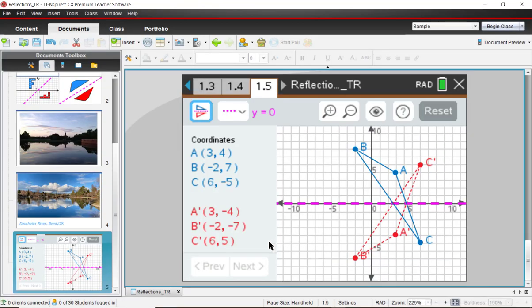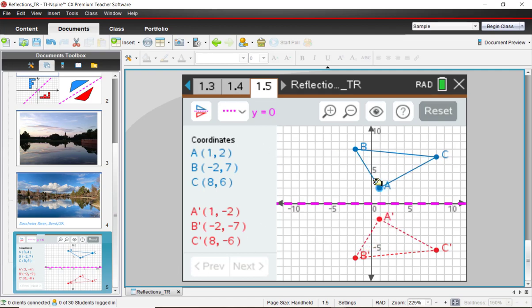Going back to the software, we shouldn't come up with any conclusions based on just one example. So let's go ahead and grab and pull vertices and see if you notice the same pattern among the coordinates that you saw before. And start thinking about how you would word this as a conjecture.